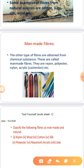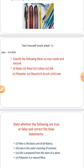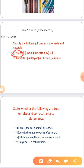I have sent you a worksheet. The task is to classify the following fibers as man-made or natural. Nylon is an artificial fiber. Wool is a natural fiber. Cotton is a natural fiber. Silk is a natural animal fiber. Polyester is artificial. Rayon is artificial. Acrylic is artificial. Jute is a natural fiber.